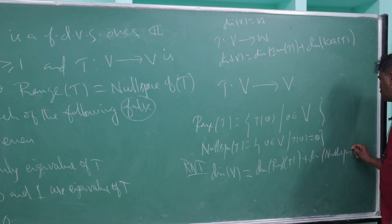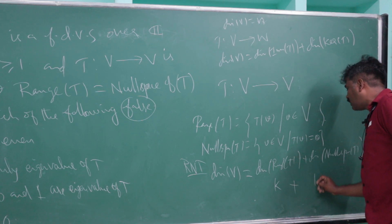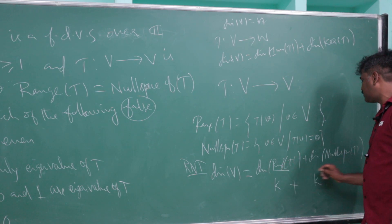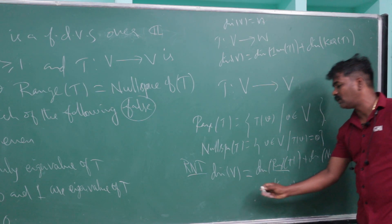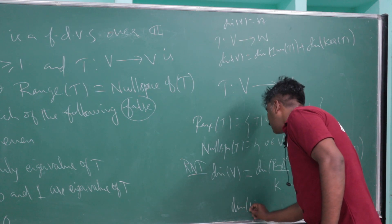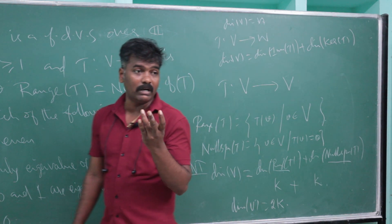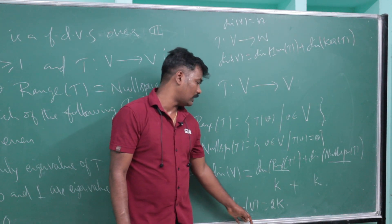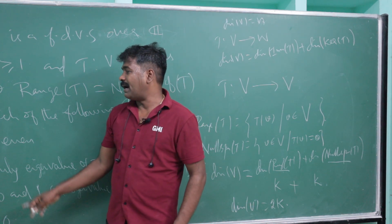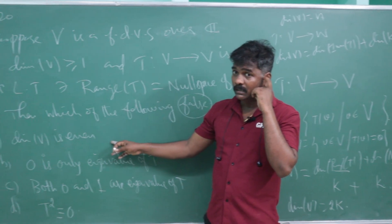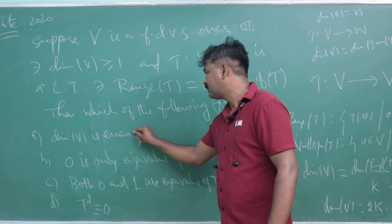Since the range and null space are the same, they have the same dimension k. So dim(V) = k + k = 2k. For k = 0, 1, 2, 3, … the dimension of V is always even. Therefore, the statement 'dimension of V is even' is always true.